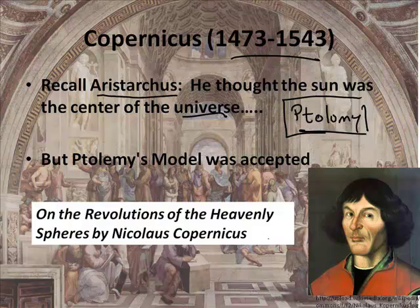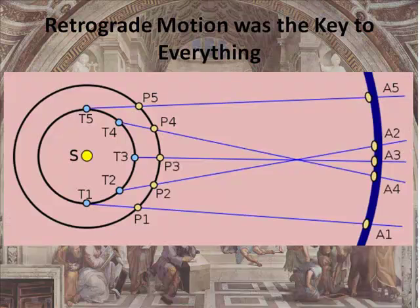Now, what Copernicus did, he wrote an important book. It was called On the Revolutions of the Heavenly Spheres, and this is Copernicus over here. So he wrote this very famous book that changed the way people thought about the universe, or as they would say, the heavens in those days.